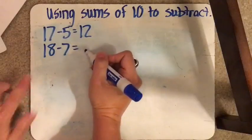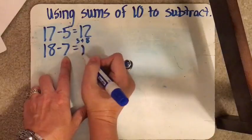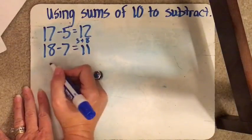18 minus 7 equals. So 7 plus 3 gets us to 10. So 3 plus another 8 more is going to be 11. I'm going to write these up again so you can see them, what I'm doing in my head.